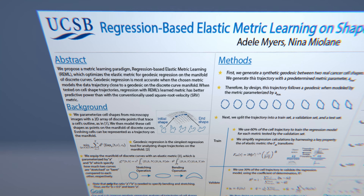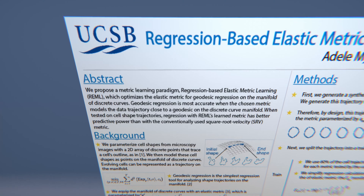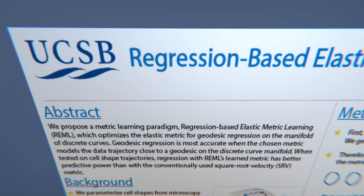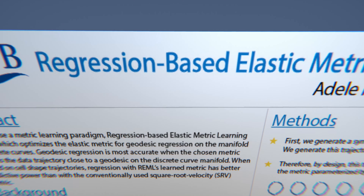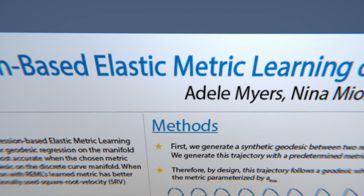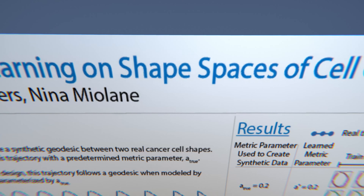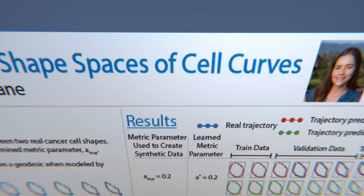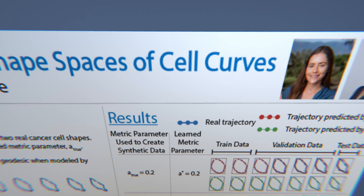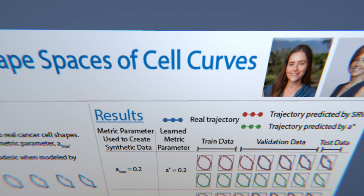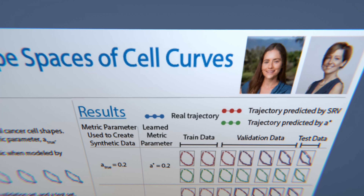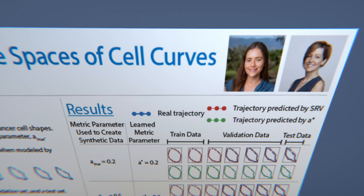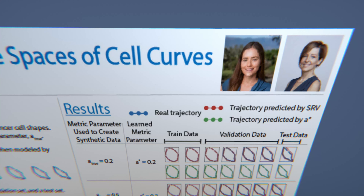When we say biological shapes, we mean things like the outline of a cell, specifically the membrane of a cell, or we could mean something like a 3D shape of the surface of a brain, or the 3D shape of a heart, or something like that.